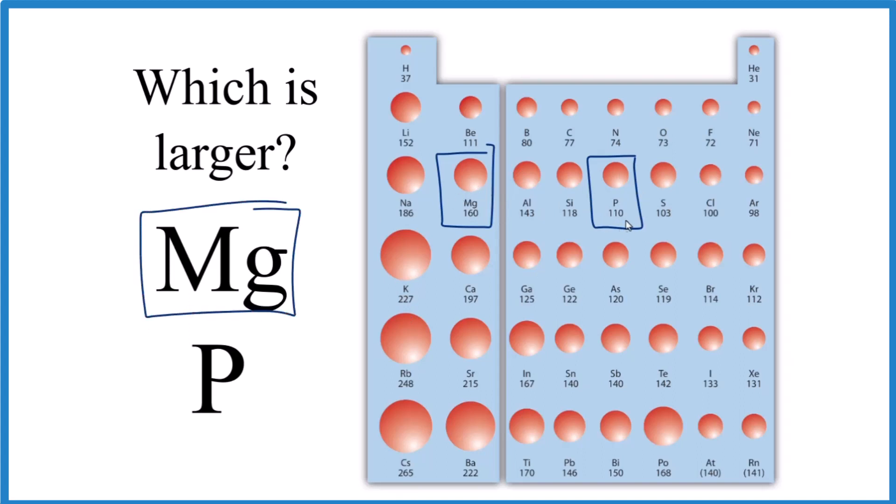So in answer to our question, magnesium, that's larger than phosphorus. This is Dr. B taking a look at the atomic radius of magnesium and phosphorus. Thanks for watching.